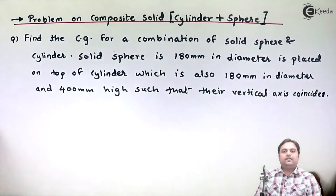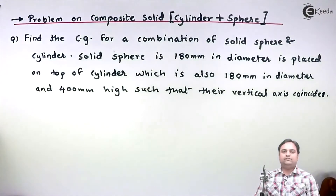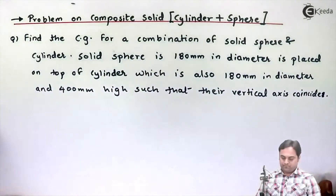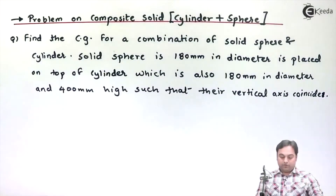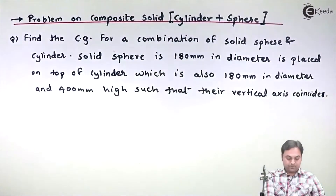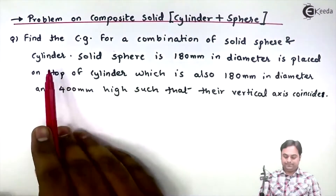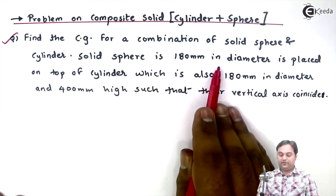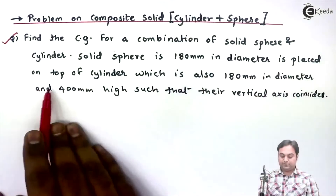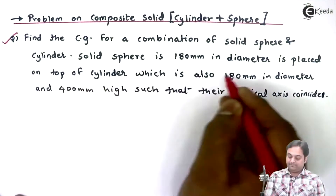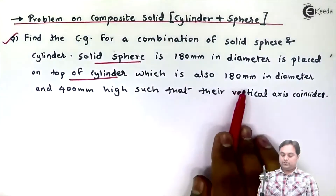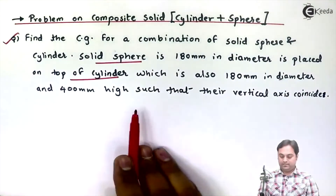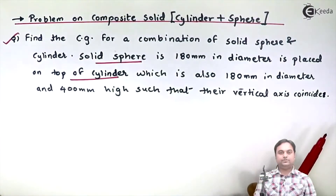In this video we will see the problem of finding the CG for a composite solid which is a combination of a cylinder and a sphere. A solid sphere 180 mm in diameter is placed on top of a cylinder which is also 180 mm in diameter and 400 mm high, such that their vertical axes coincide.